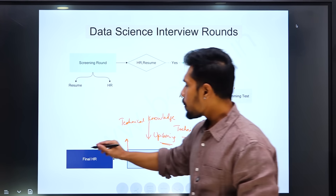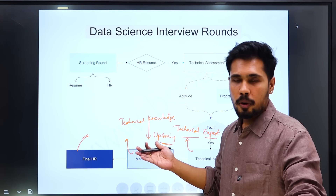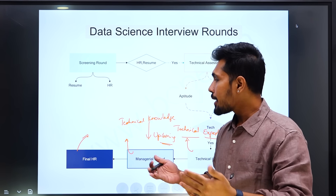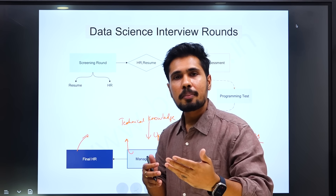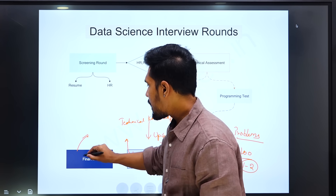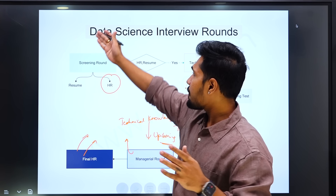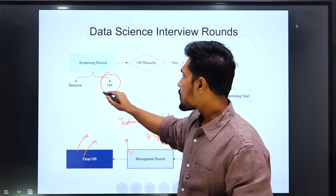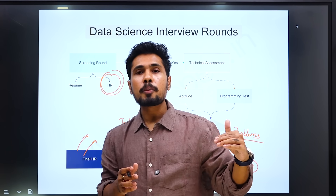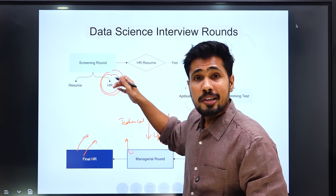Once the managerial round is completed, you go with the final HR round where you discuss feedback from all the interviews. If you are not selected, they give positive or negative feedback which you can take as inputs. If you are selected, they give positive feedback and discuss salary negotiation, documentation, and notice period. Notice period plays a crucial role — if you have a three-month notice period, they may not even screen you into the rounds, depending on urgency.